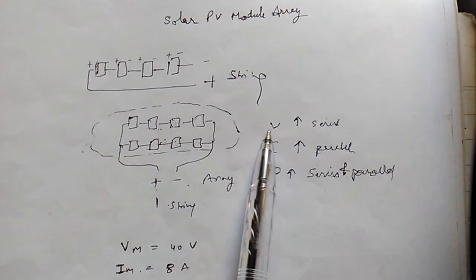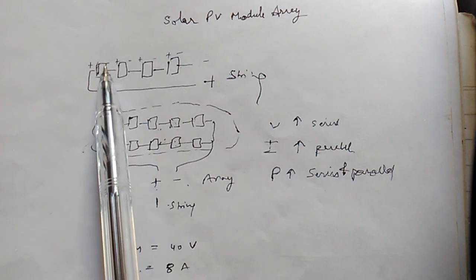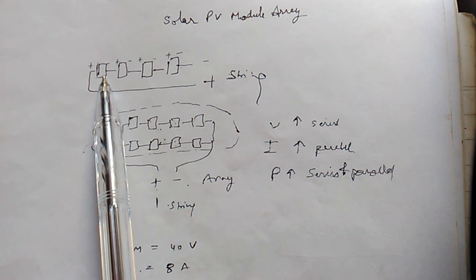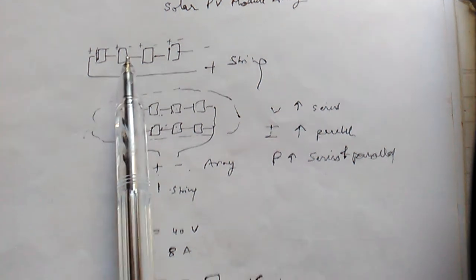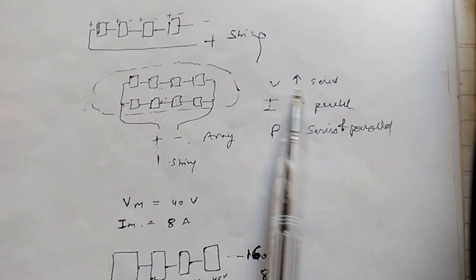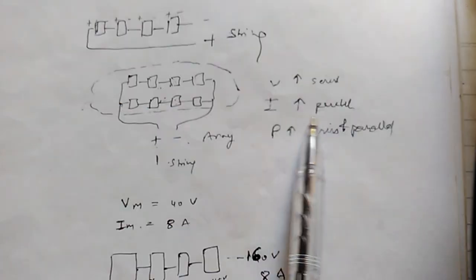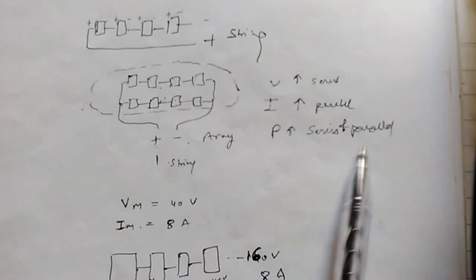Voltage increases in series, current increases in parallel, and power increases in both series and parallel connections.